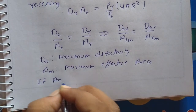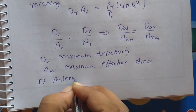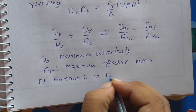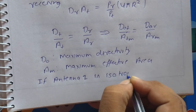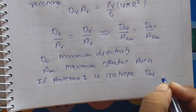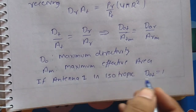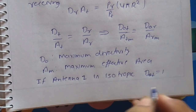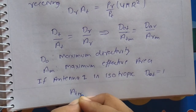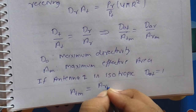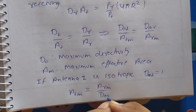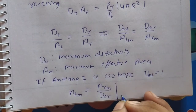If antenna 1 — the transmitting antenna — is isotropic, we know that the directivity of an isotropic radiator is 1. So if antenna 1 is isotropic, then D₀T will be equal to 1. Therefore ATM equal to ARM divided by D₀R for any antenna.